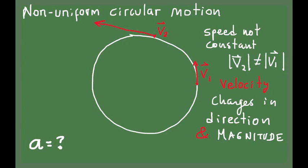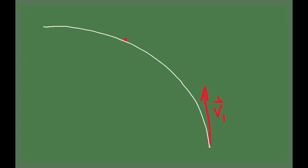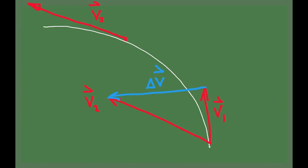So when this is the case, how do you calculate the acceleration? Let's redraw that a little bigger. That's the vector v1, and that's the vector v2 at a different point — we'll assume that we're exaggerating the distance between these two points; they're supposed to be close. In this case, v2 is bigger in magnitude than v1. To calculate the acceleration, you need to calculate the change in velocity. To do that, you move v2 so that its tail coincides with the tail of v1, and you draw the vector delta v going from the head of v1 to the head of v2.